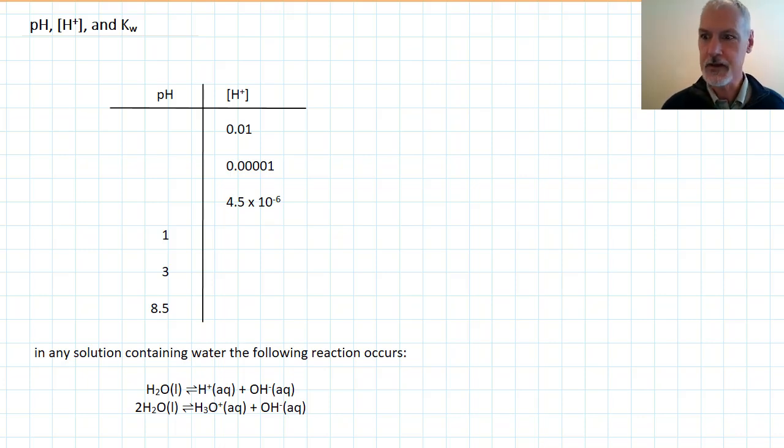Get out your calculators and get ready for this unit. It's a look at pH, the hydrogen ion concentration, and something called the ion product for water. Let's begin with a look at the hydrogen ion concentration and pH.